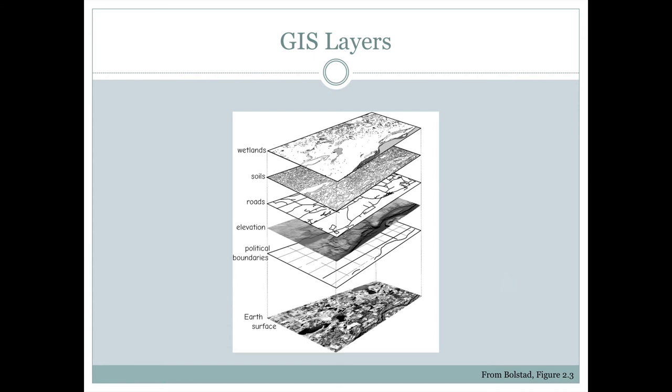GIS information is organized into layers. So all of one type of thing, such as roads, would be on one layer. The nice thing about this is that we can then turn those layers on and off or include them or not include them or symbolize them in a certain way, depending on what our preferences are for the map. But all of those layers together are meant to represent the real world or the surface of the earth.